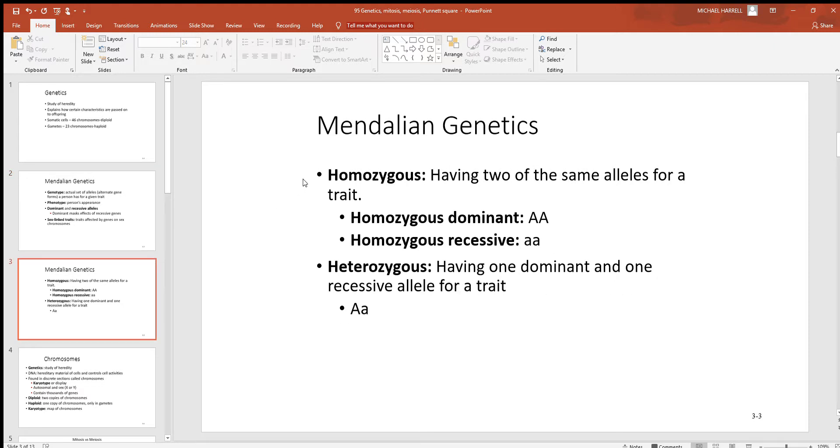Some other terms you hear about are homozygous and heterozygous. Homozygous means you're having two of the same alleles for a trait. Homozygous alleles come up in one of two ways: homozygous dominant or recessive. The dominant genes are always represented by capital letters and the recessive genes by lowercase. If someone's homozygous dominant, they've got two of the dominant genes, shown as two uppercase A's. Homozygous recessive is where an individual has two recessive genes, shown as two lowercase A's. Heterozygous is where you have one dominant and one recessive.